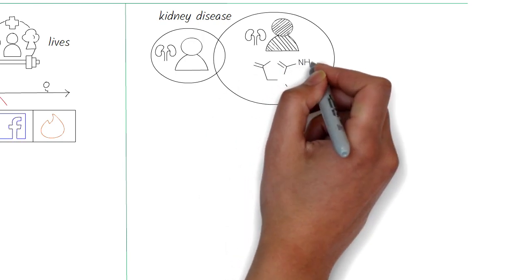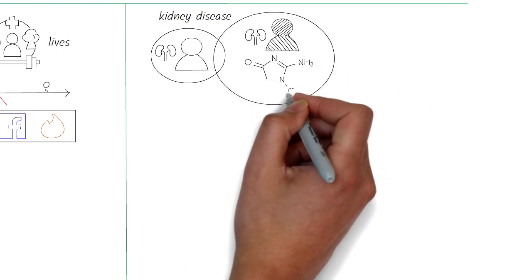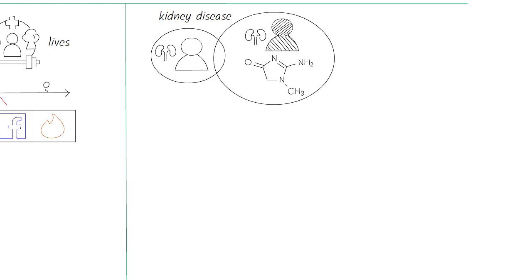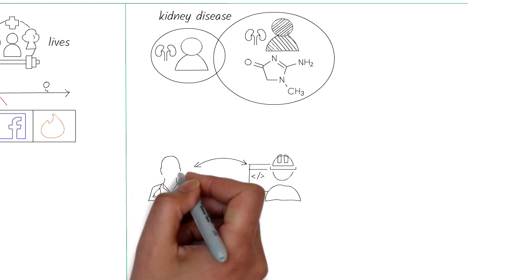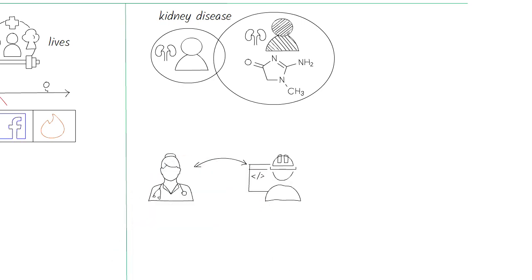This is because blacks have more creatinine which is an indicator of how well a person's kidney functions. So engineers in consultation with doctors designed software to correct for this by adding a factor of 1.2 which in turn made bad kidneys look good.